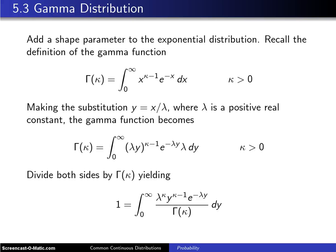So far, two continuous distributions have been introduced, namely the uniform distribution and the exponential distribution. This section, section 5.3, introduces a third distribution, which is known as the gamma distribution.